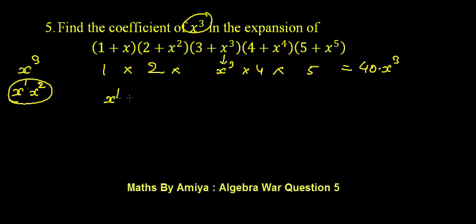So x1 from the first bracket, x square from the second bracket, and for the third bracket we have taken 3, the constant is 4, the constant is 5, and multiply. That is nothing but 60 into x cube, and total summation is 100 x cube.